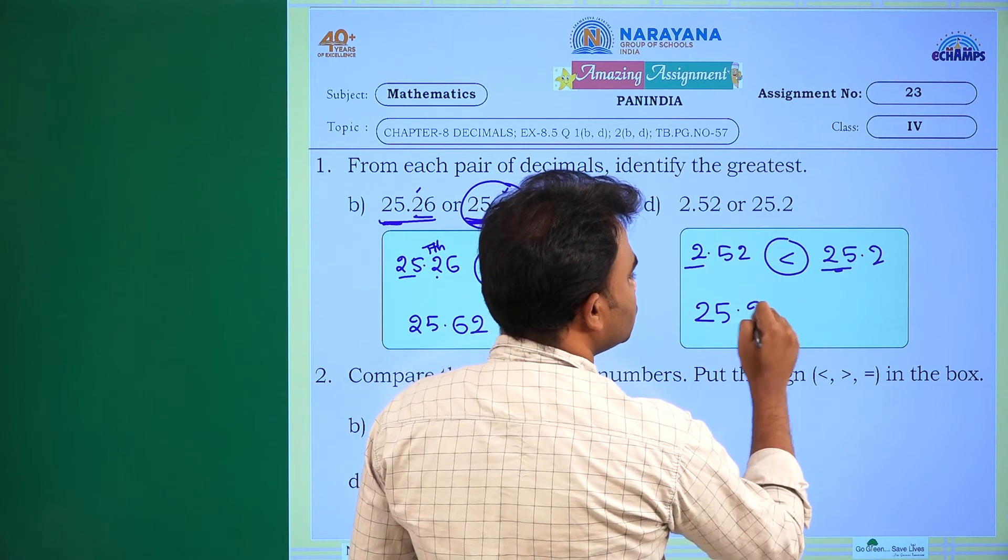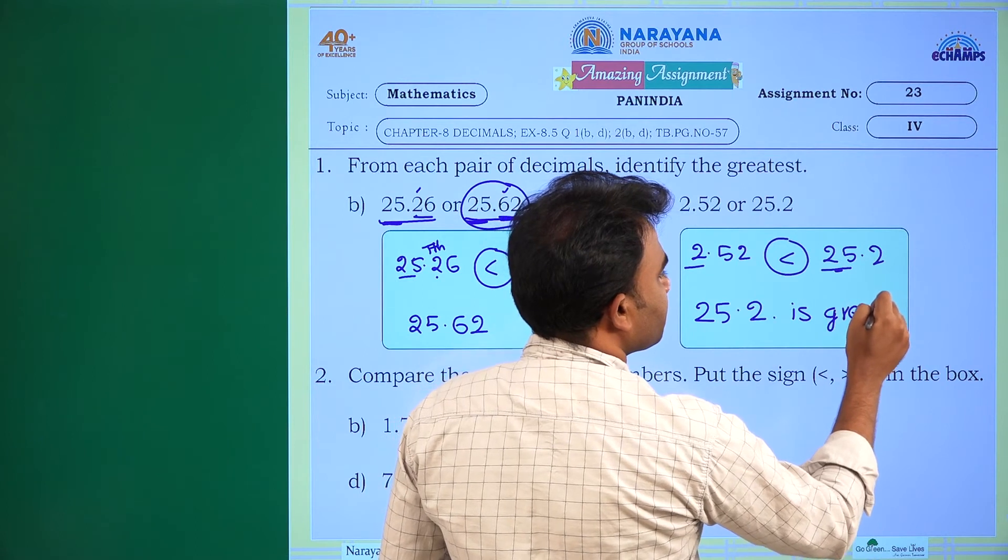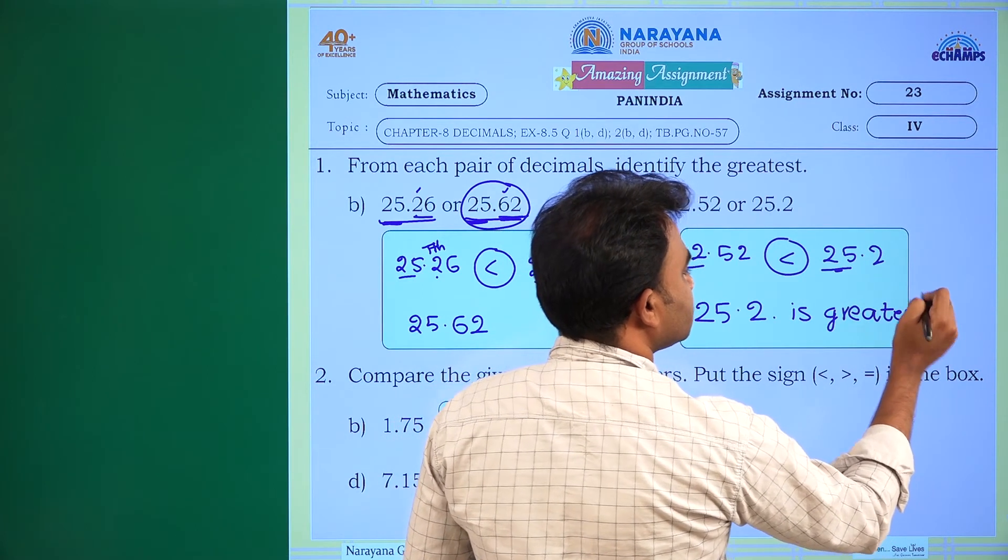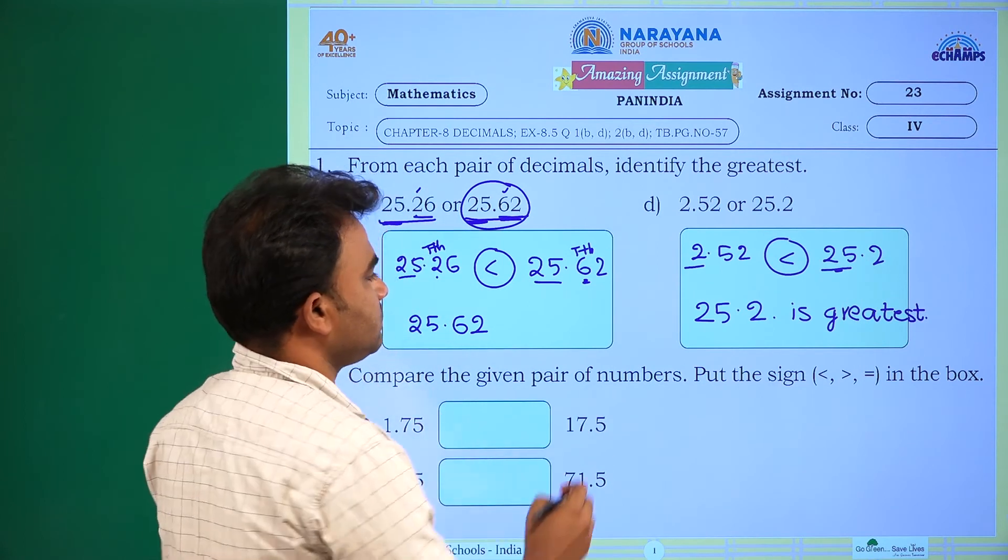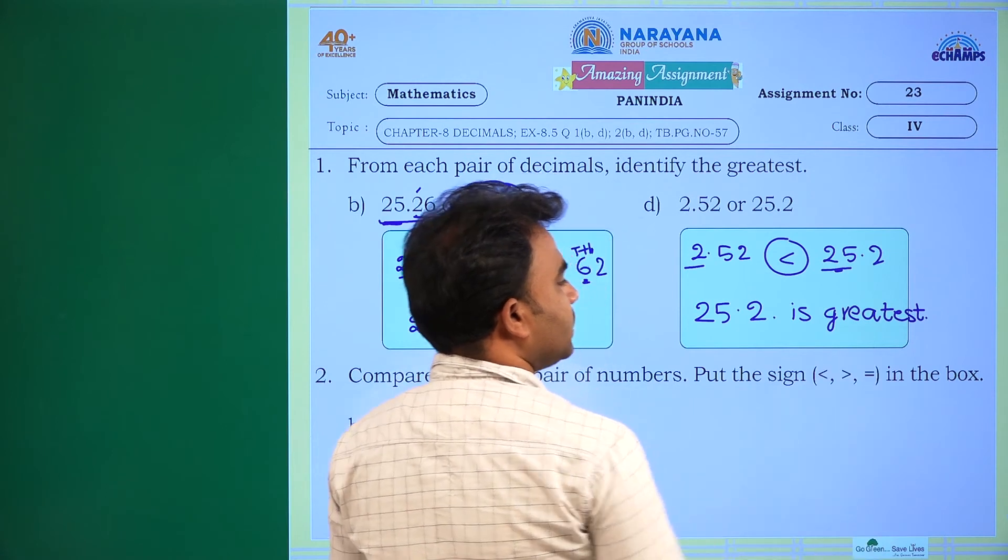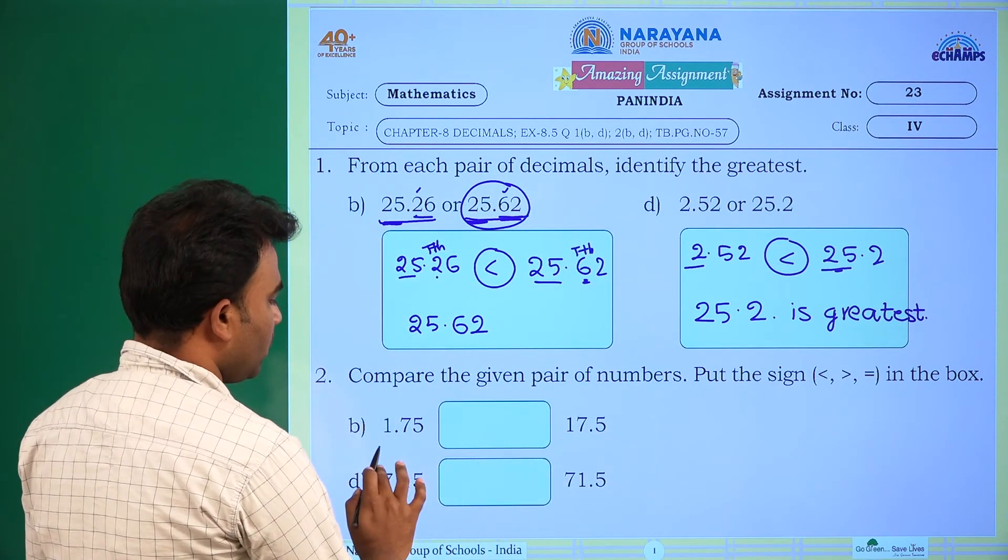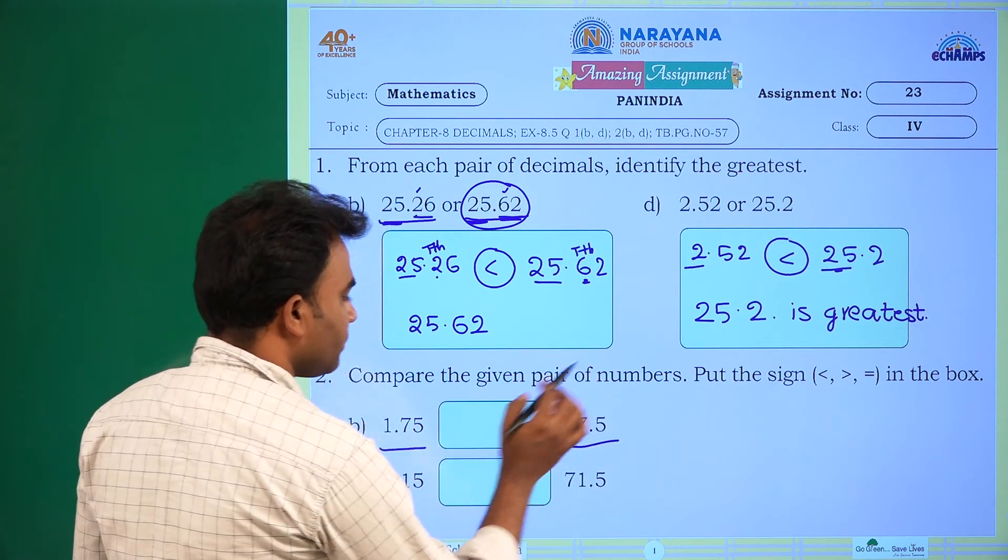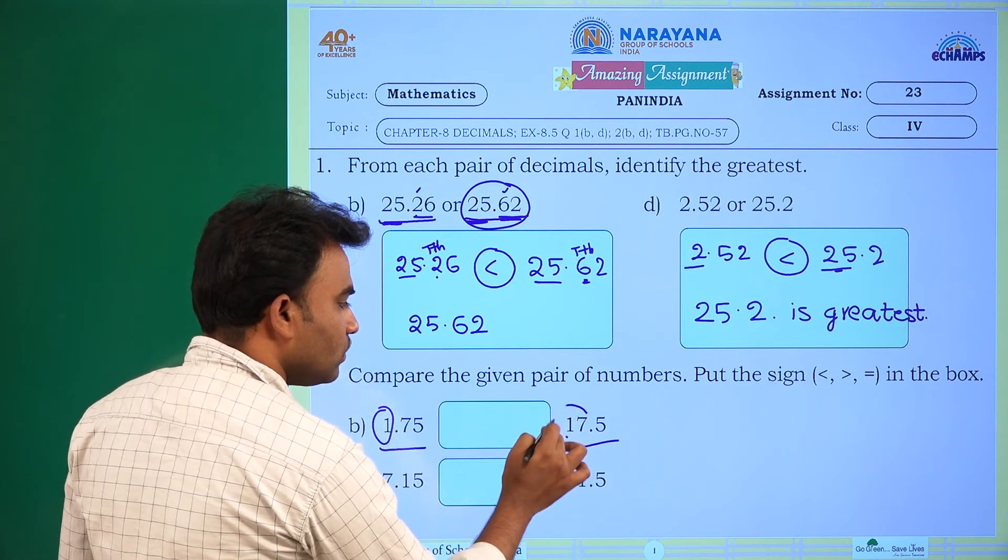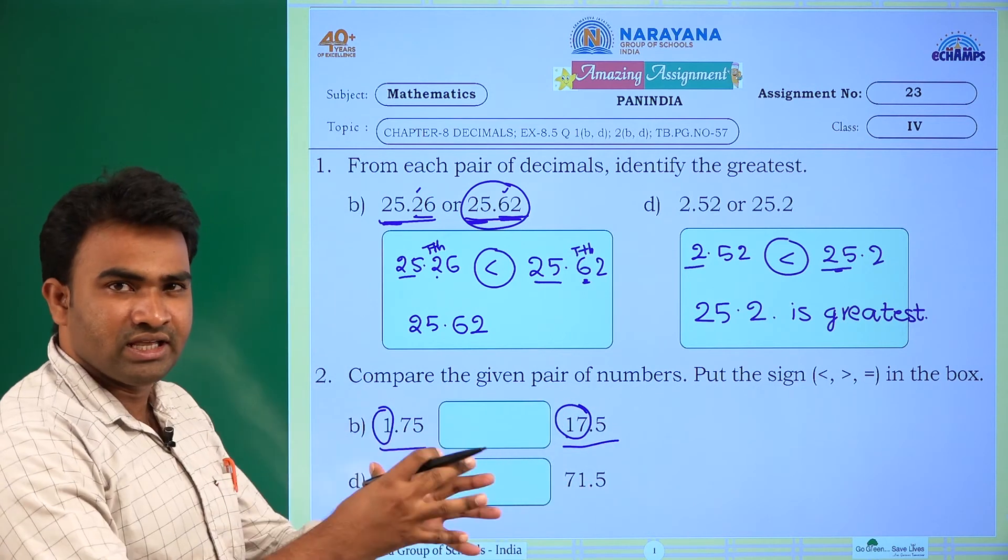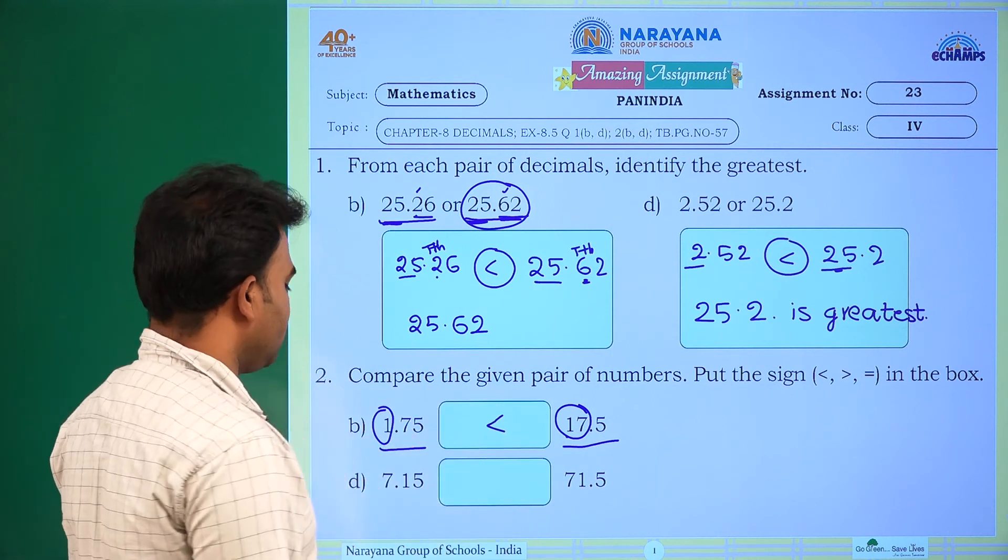Compare the given pair of numbers. Put the sign (<, >, =) in the box. This is the given problem: 1.75 and 17.5. In whole number we have 1 and 17. As 17 is greater, less than symbol will come, this is greater.